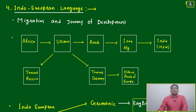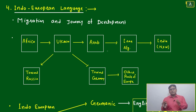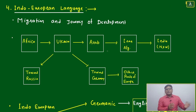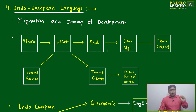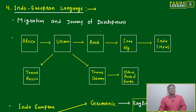Now we'll come down to Indo-European language. We understood plant language, animal language, human language, inhuman language — how it developed, how migration happened, and how many language families there are. Now we come to the point of Indo-European language: its migration and journey of development.